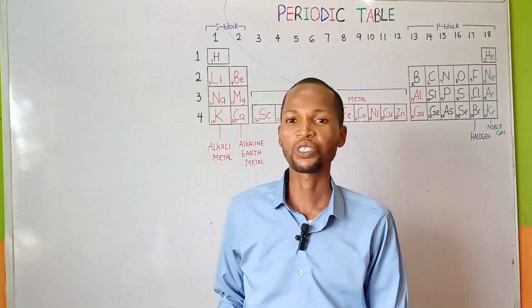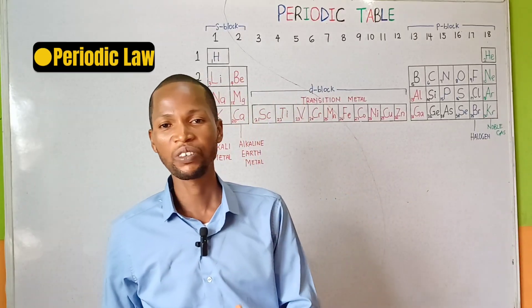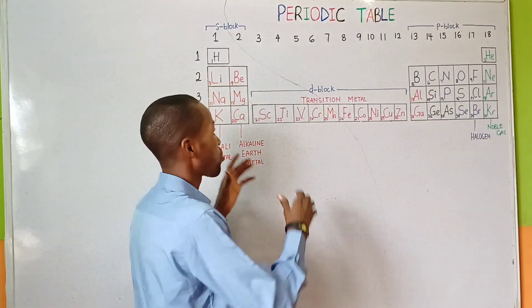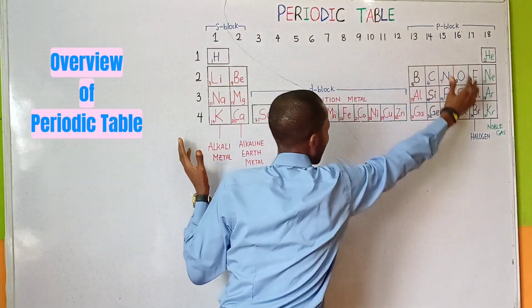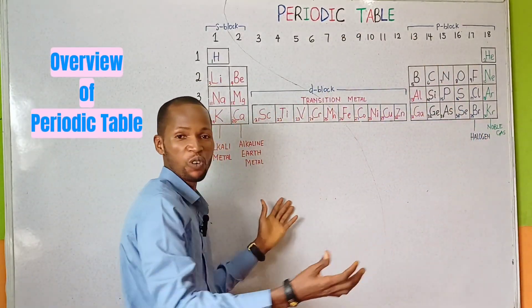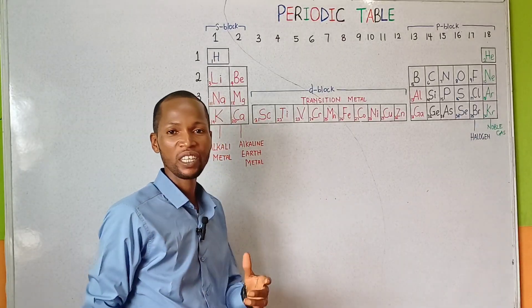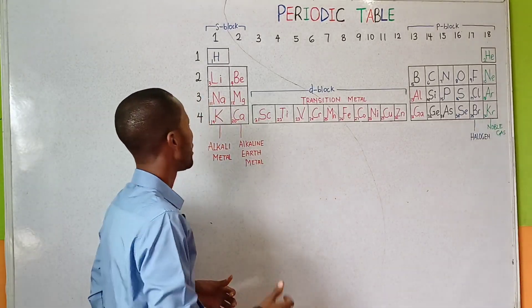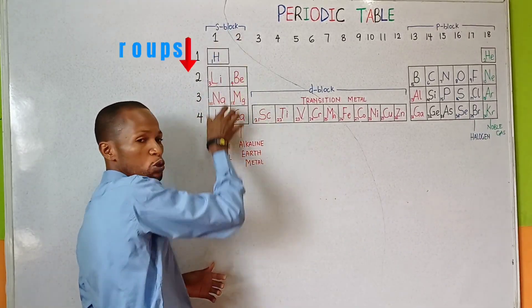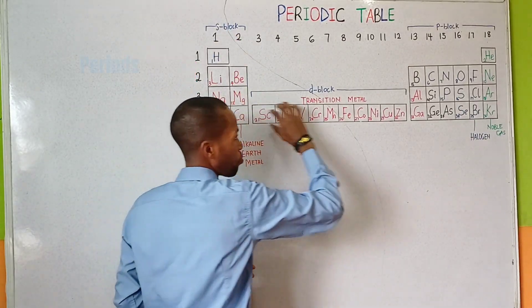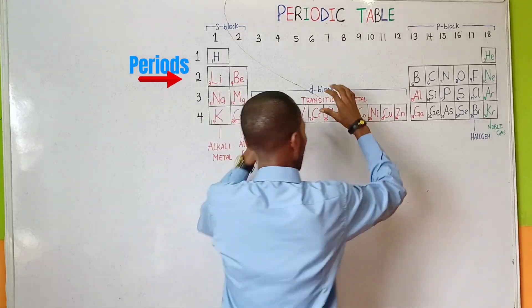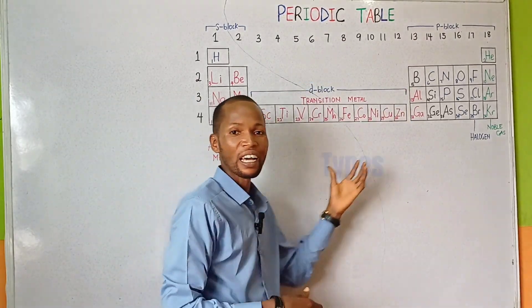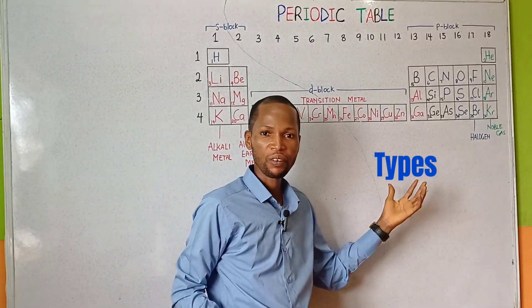In this class, I'm going to be talking about the periodic law and also I will consider the general overview of the periodic table in which I will classify elements into group, period, blocks, families, and type.